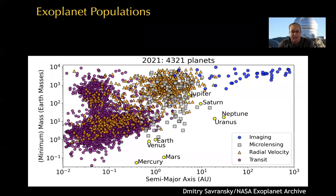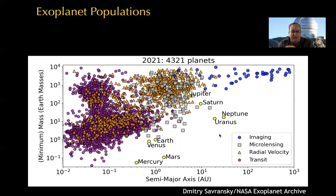Just to set the stage, here's this classic plot of semi-major axis versus mass for all the known exoplanets as of a couple weeks ago. With these symbols and colors going by the detection techniques, you can see the different types of planets each technique finds.